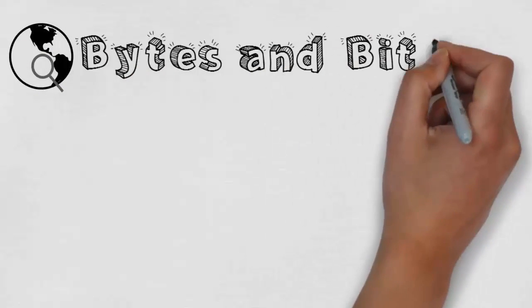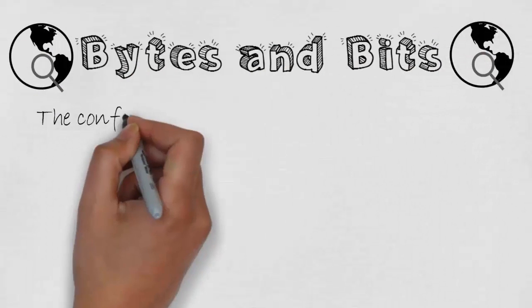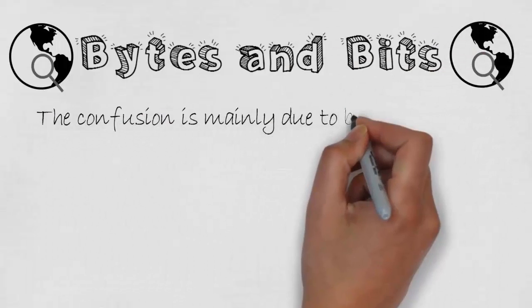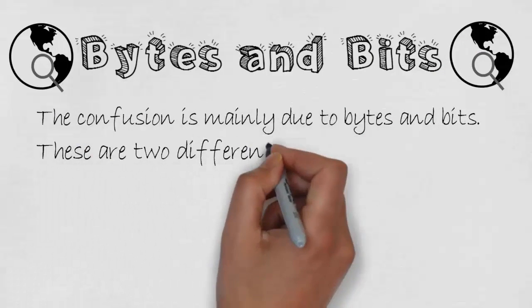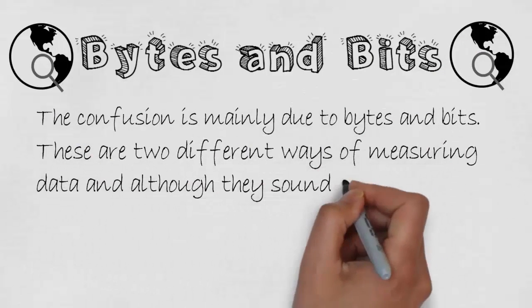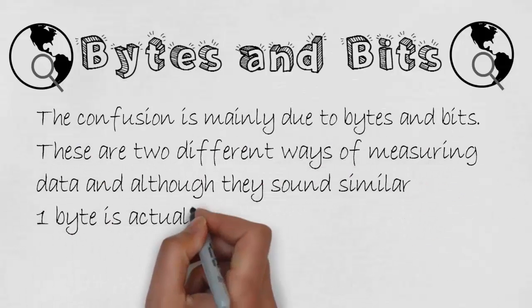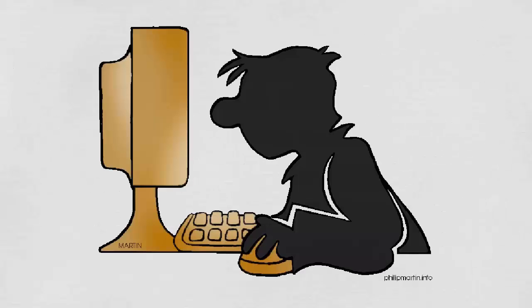Bytes and bits. The confusion is mainly due to bytes and bits. These are two different ways of measuring data and although they sound similar, one byte is actually 8 bits.